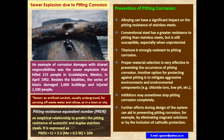Fourth, proper material selection is very effective in preventing the occurrence of pitting corrosion. Another option is to mitigate aggressive environments and environmental components such as chloride ions and low pH. Fifth, inhibitors may sometimes stop pitting corrosion completely. Sixth, further efforts during design of the system can aid in preventing pitting corrosion — for example, by eliminating stagnant solutions or by inclusion of cathodic protection.